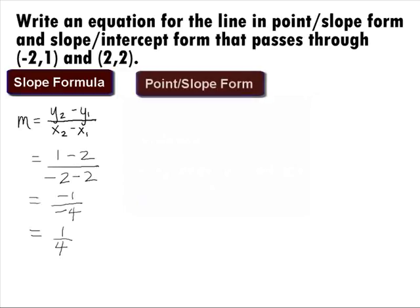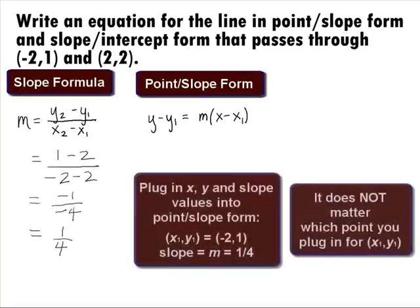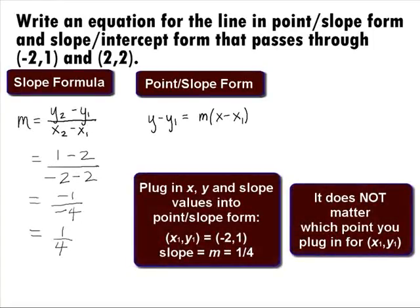Given a point x1, y1 and a slope of m, the point slope equation of the line is y minus y1 equal to m times the quantity x minus x1. We can use either point to plug in here. I went ahead and plugged in negative 2 for x1 and 1 for y1 and of course, 1 fourth for m into this equation.